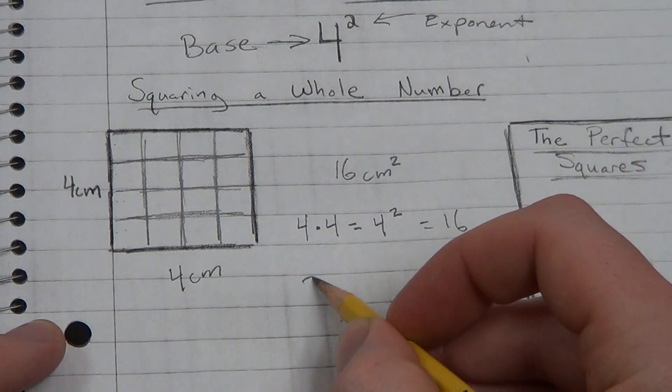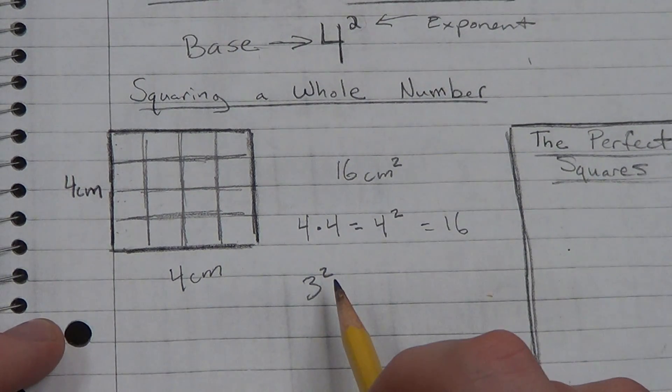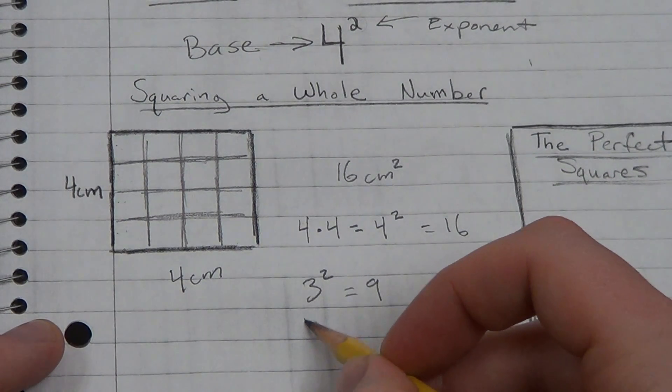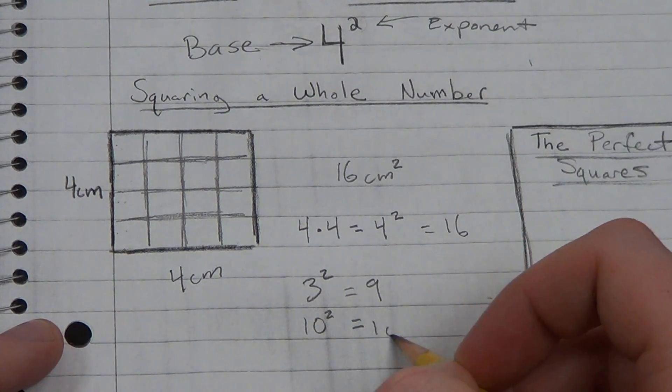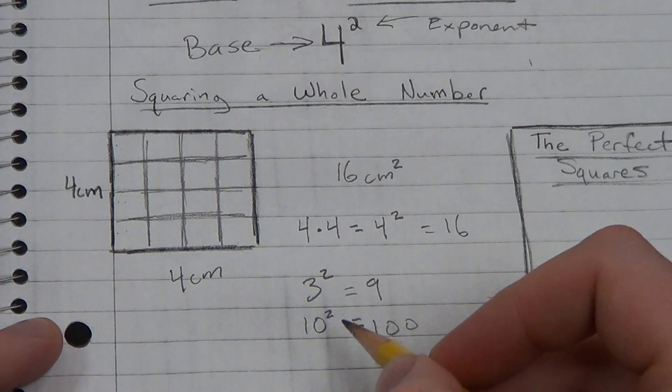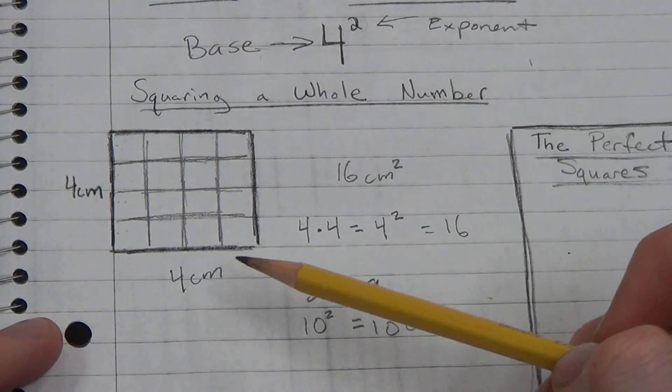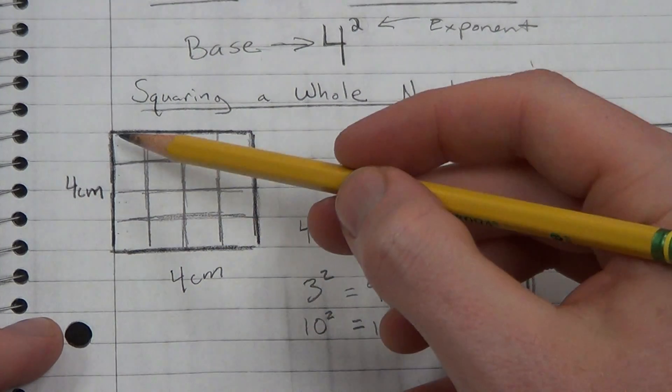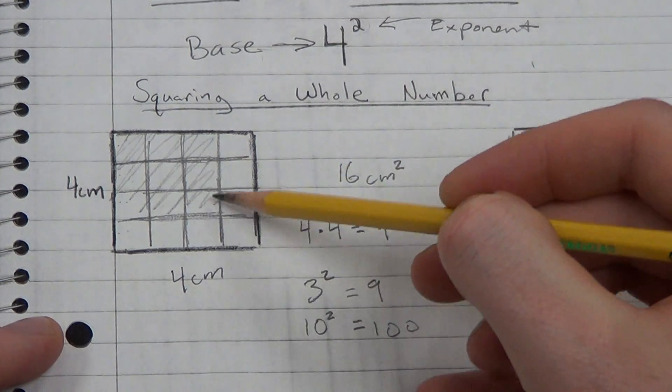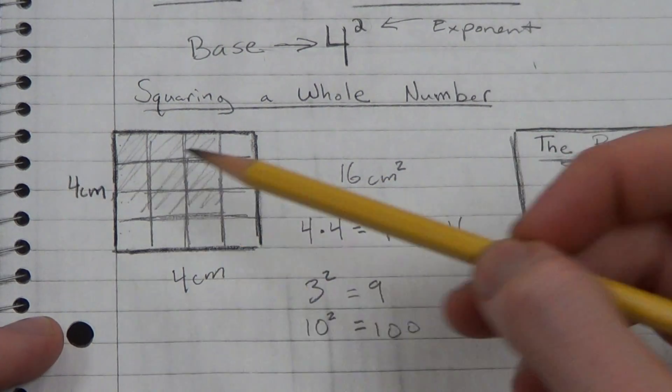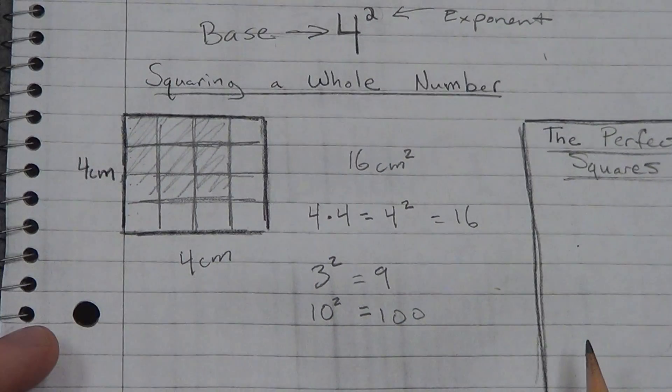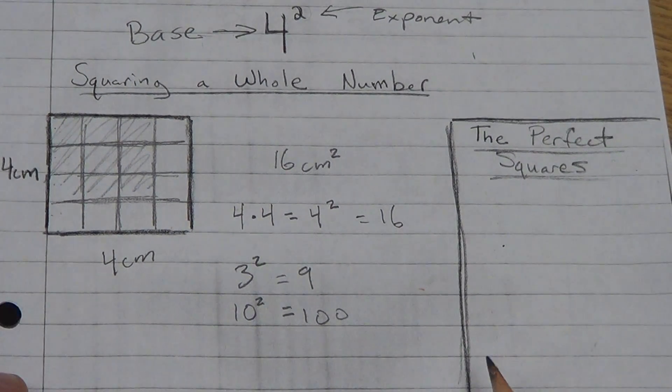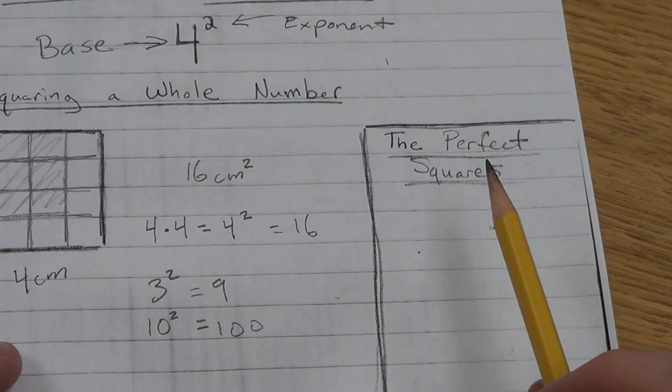So when you multiply a number times itself, it's called squaring that number. This is 4 squared, which is 16. Now, you can do this with any number, but we're specifically going to look at whole numbers. Because you can square 3, 3 squared is 3 times 3, which is 9. You could square 10, 10 squared is 100, because it's 10 times 10. Now these numbers, 16, 9, 100, all have a special term. They're called perfect squares.